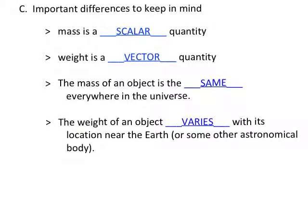Let's summarize. A couple of important differences to keep in mind. Mass is a scalar quantity and weight is a vector quantity. Also, the units will help you distinguish between mass and weight. Mass is kilograms and weight is in newtons because it's a type of force.